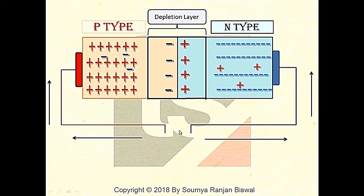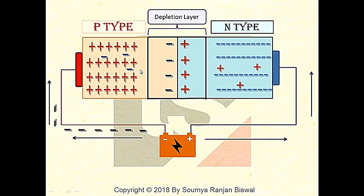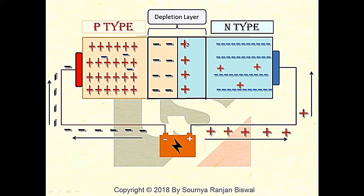For reverse biasing, connect the negative terminal to the P-type semiconductor and the positive terminal to the N-type semiconductor. The negative terminal increases the electron concentration in the P-type semiconductor and the N-type semiconductor, so the depletion layer increases and there is no further conduction. This is called reverse biasing mode.